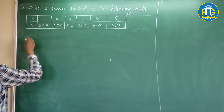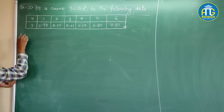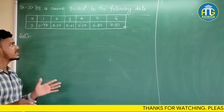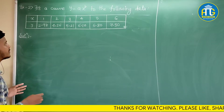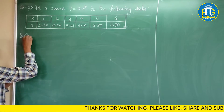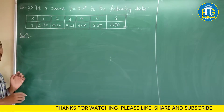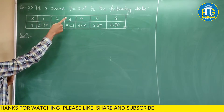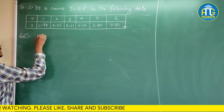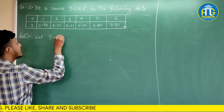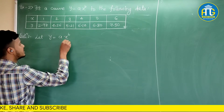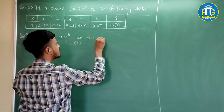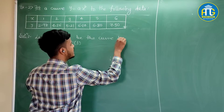Let us start. As far as the working rule is concerned, we will apply the same working rule with some slight changes, because here we will be getting different normal equations. So, we have to fit this given curve. Let y = ax^b be the curve to be fitted.